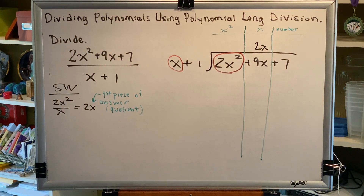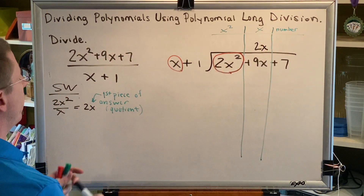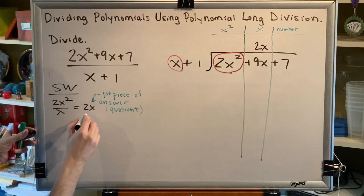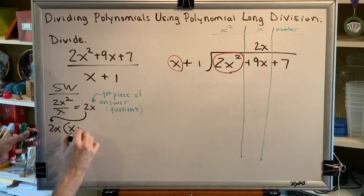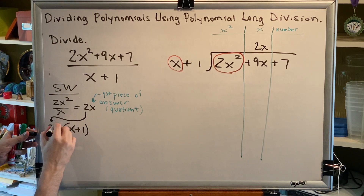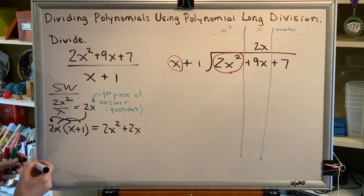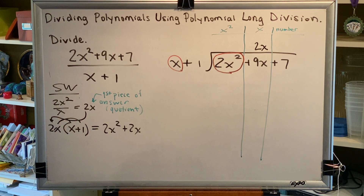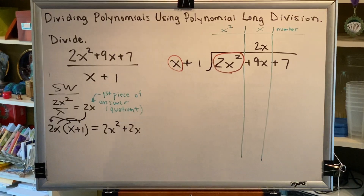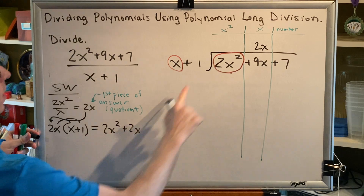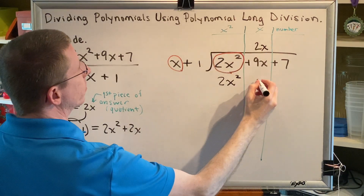The next step of polynomial long division is to take the newest entry in our quotient and multiply it by the entire denominator. So we draw a little arrow showing that our 2x is now going to be used to multiply by our denominator, which is x plus 1, and we distribute to get 2x squared plus 2x. We place this result beneath the numerator in the appropriate columns — 2x squared in the x squared column and 2x in the x column.